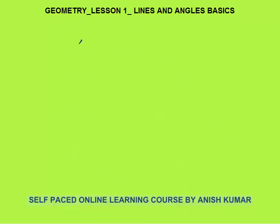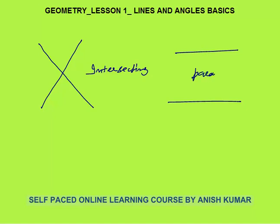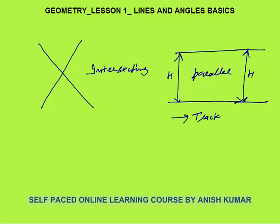Lines can be intersecting — these are intersecting lines — or lines can be parallel. These are parallel lines. The property of parallel lines is that the distance between them will always be the same at any point. The shortest distance between the two parallel lines is always the same. An example of parallel lines is the tracks of a railway.